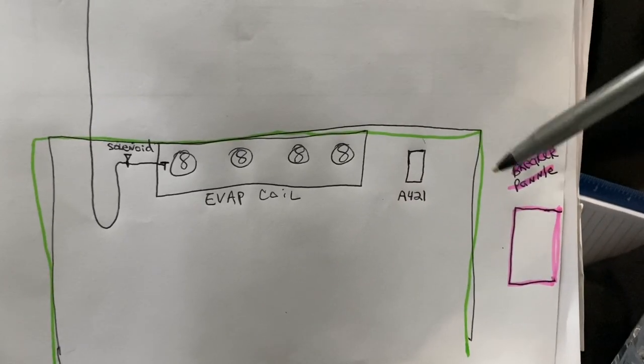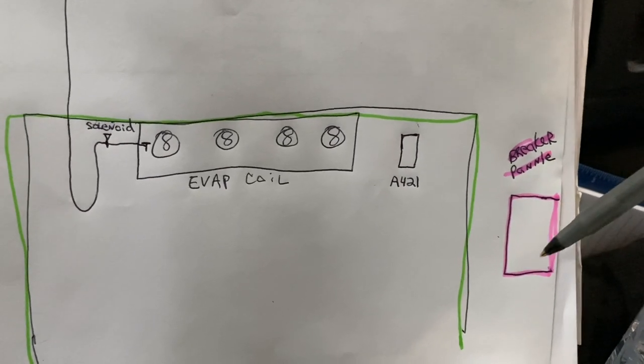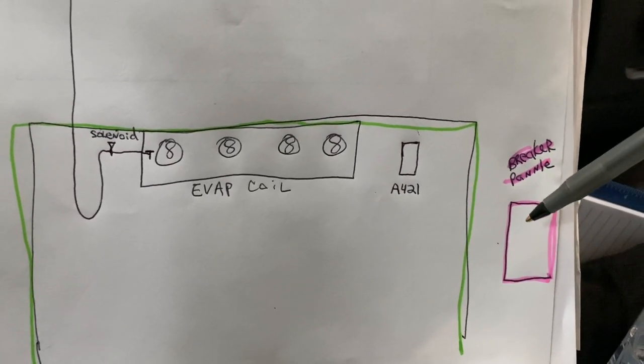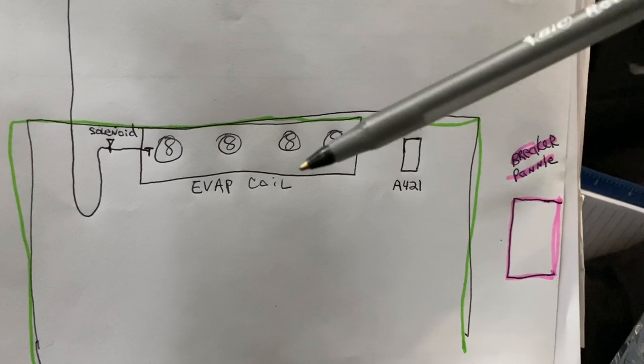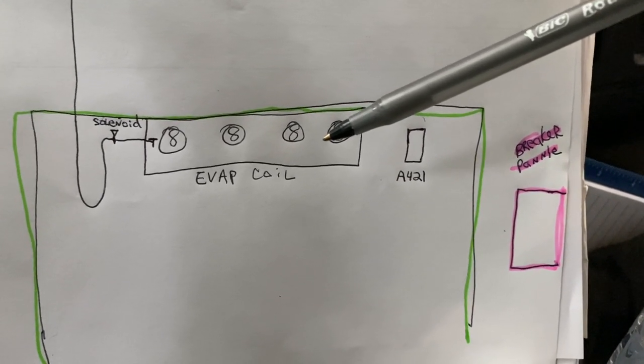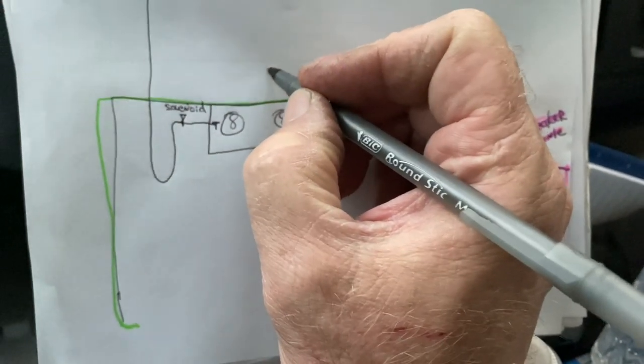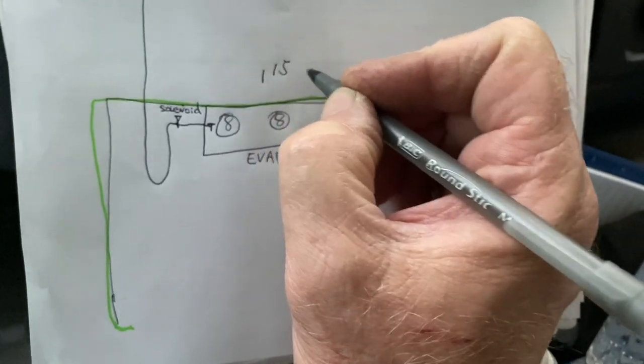Now in the building, we got our breaker panel. This is where it all starts. We're going to have a separate circuit for evaporator fans, which is usually in this scenario 115 volts. Let's write that on there.